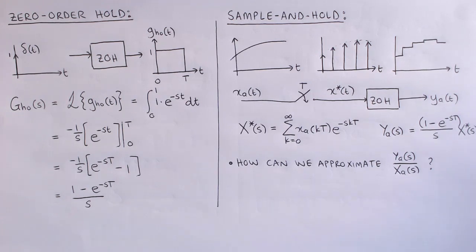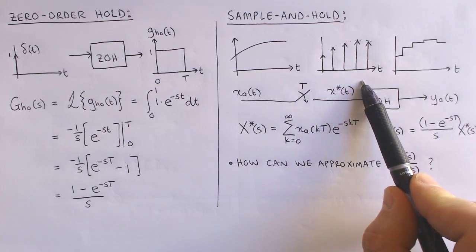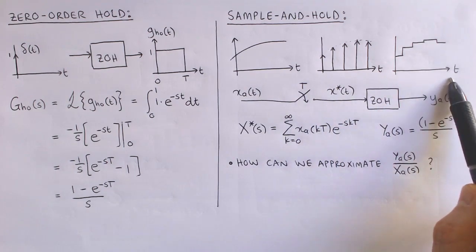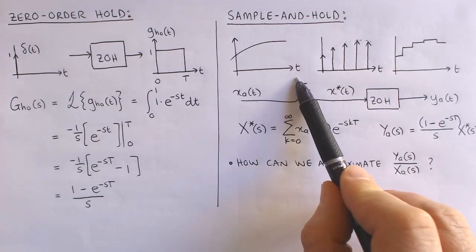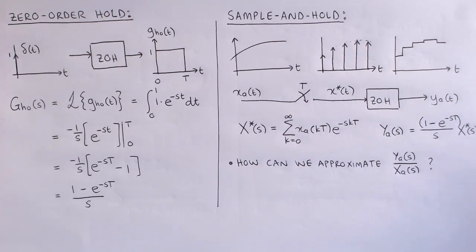If the sampling frequency is high, that is, the impulses in the impulse train are close together, then we expect the output signal to closely resemble the input signal. This means that the output is approximately equal to the input, which means that the transfer function is approximately one. If the sampling frequency is low, then we expect this approximation to be quite inaccurate.